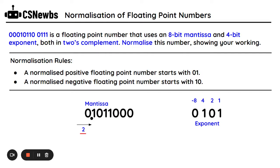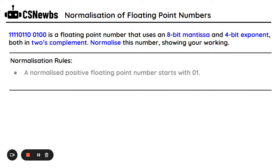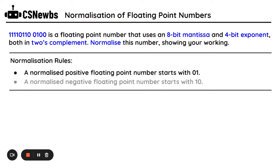So, my exponent now is 5. The mantissa and exponent are now normalized, and I can neatly write them out. I'm going to do another example now with a new number in the top left, still using an 8-bit mantissa and a 4-bit exponent.